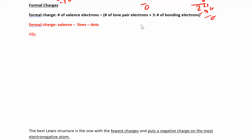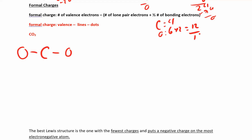Let's look at carbon dioxide and draw the Lewis structure for CO₂. We have a carbon and two oxygens. Carbon has 4 valence electrons and oxygen has 6, times 2 is 12, for a total of 16 electrons. I've already used 4 for the single bonds, so I have 12 left over, and after distributing them I'm out of electrons — but carbon is not happy.